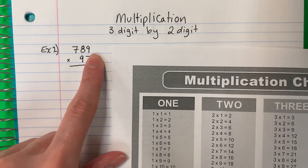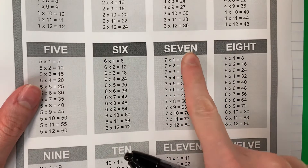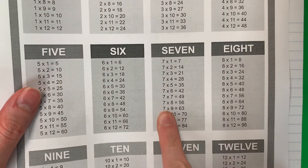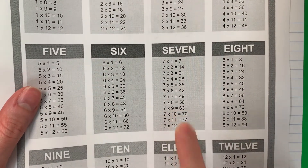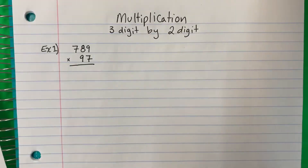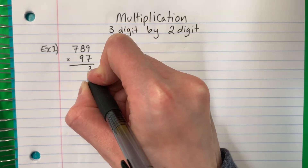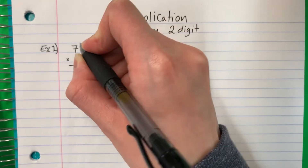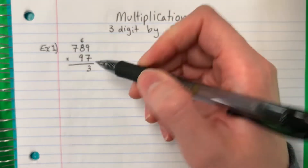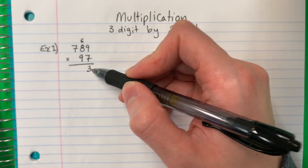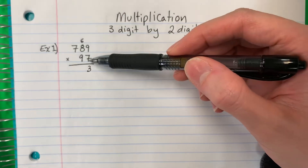So seven times nine. Siete por nueve. Seven times nine is 63. Sesenta y tres. So you put the three here, and then you put the six here. Pongo el tres aquí y el seis allí.